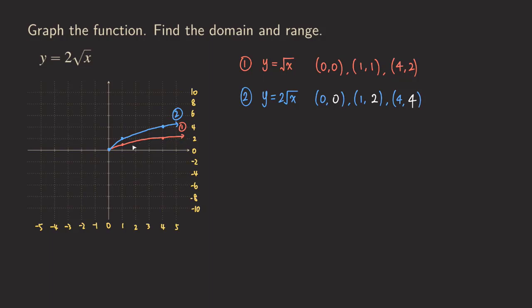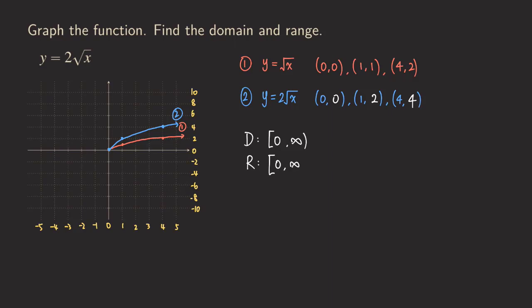As you can see, we are stretching this graph vertically. We still need to find the domain and range. The domain is still the same as the parent function, because stretching vertically does not affect what x-values we can plug in — we still get [0, ∞). The range also remains the same: we are just multiplying all y-values by two, but the output still starts from zero and goes to infinity, so the range is also [0, ∞).